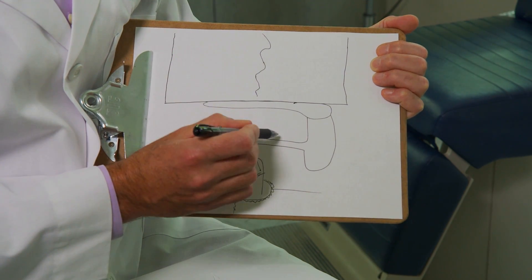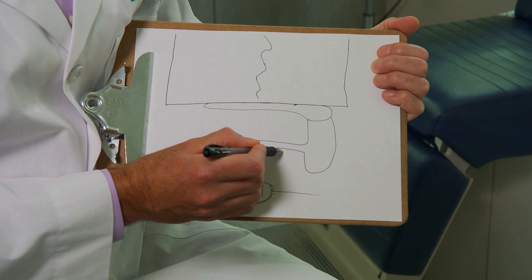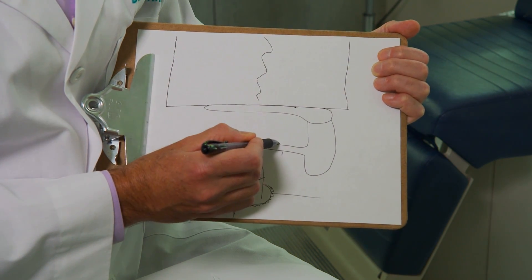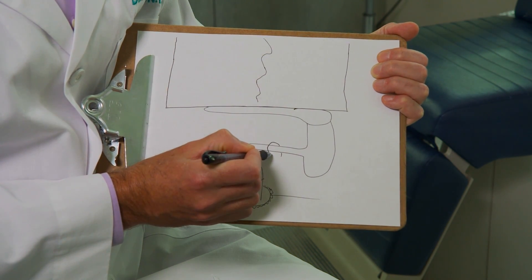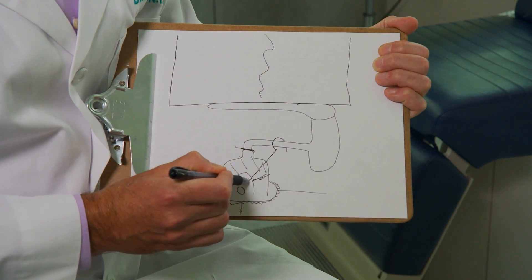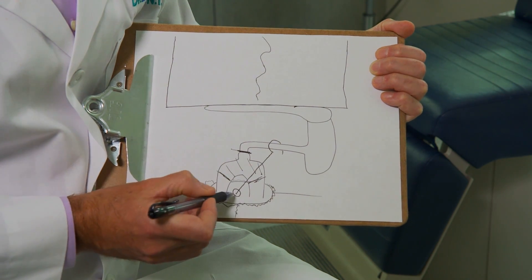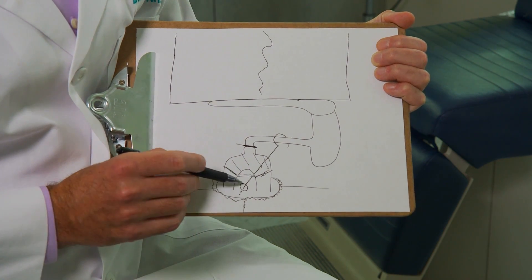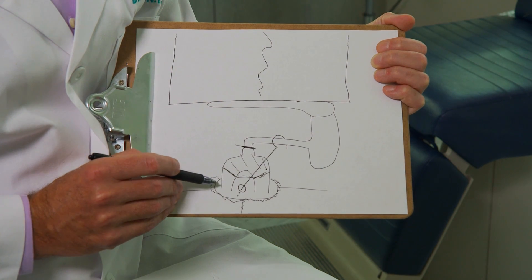A piston is then inserted, which loops around the incus and goes down through the stapedotomy to the inner ear.